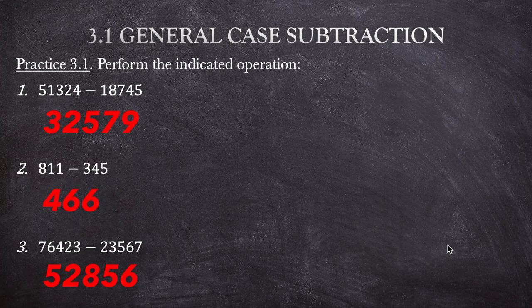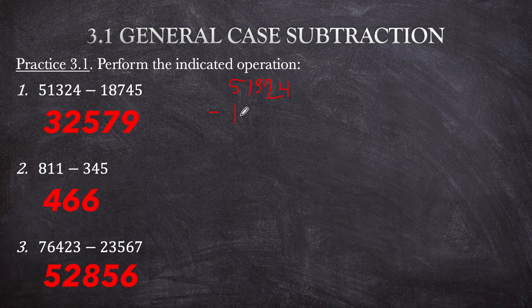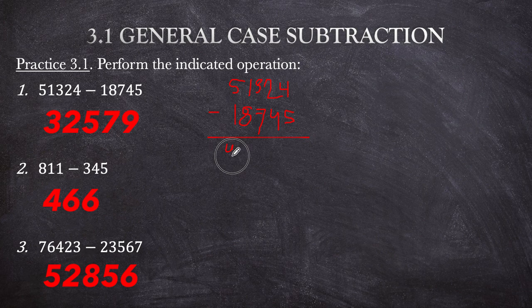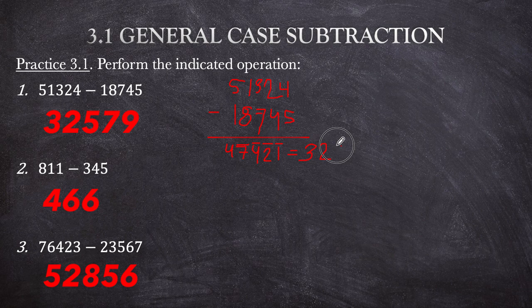Here are the answers. For 51,324 minus 18,745: 5 minus 1 is 4; 1 minus 8 is bar 7; 3 minus 7 is bar 4; 2 minus 4 is bar 2; 4 minus 5 is bar 1. Converting: subtract 1 to get 3, then 'all from 9' gives 9, 2, 5, and 'last from 10' gives 9. Answer: 32,579.